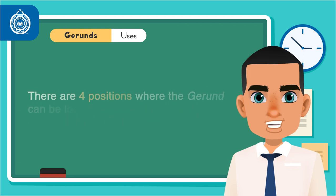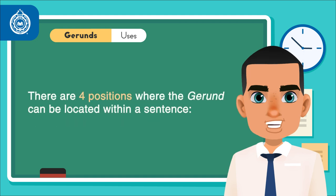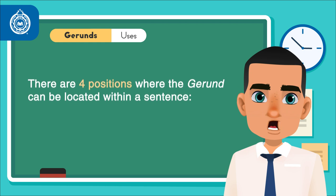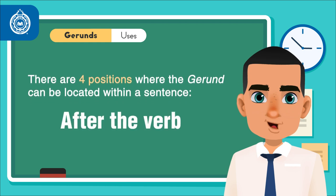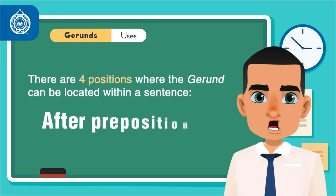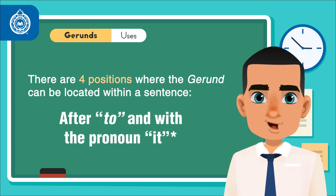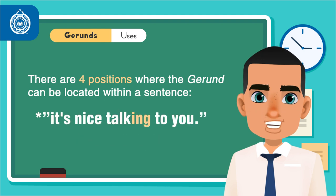There are four positions where the gerund can be located within a sentence. These are: after the verb, after prepositions, -ing after 'to', and with the pronoun 'it' — as in: it's nice talking to you.